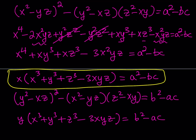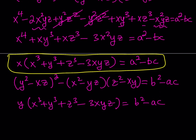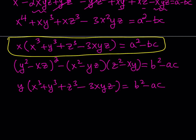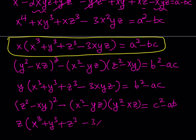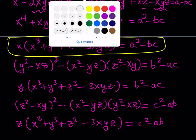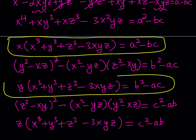By squaring the second equation and subtracting the product of the first and third, we got that result. If you do this to the third equation — square it and subtract the product of the first and second — you get C squared minus AB on the right-hand side, and Z will be on the outside. You can test this; the same pattern holds.